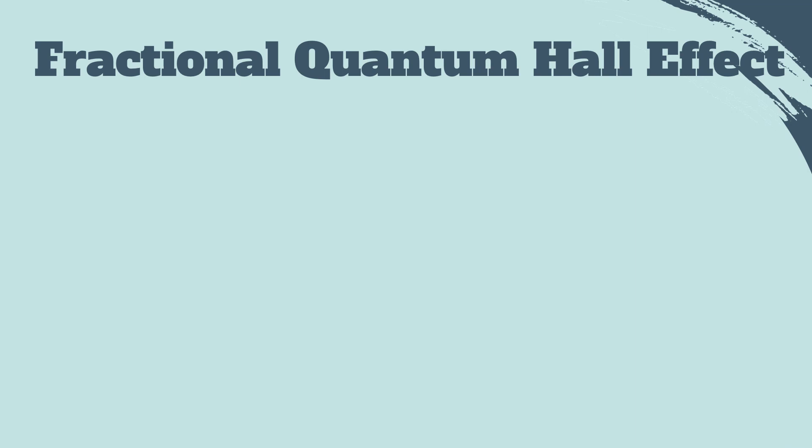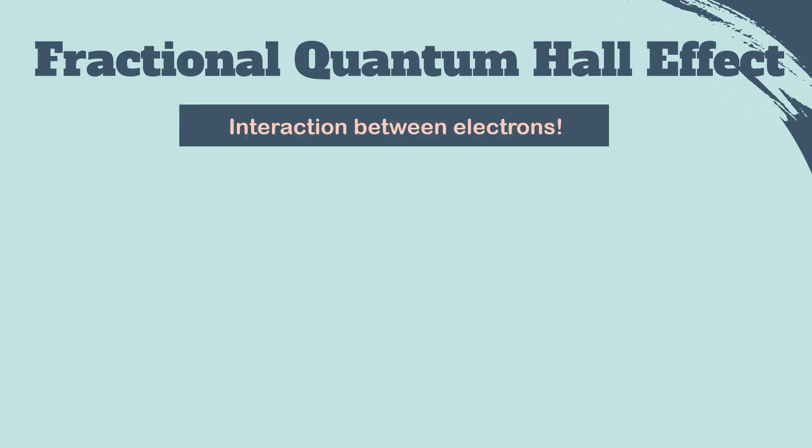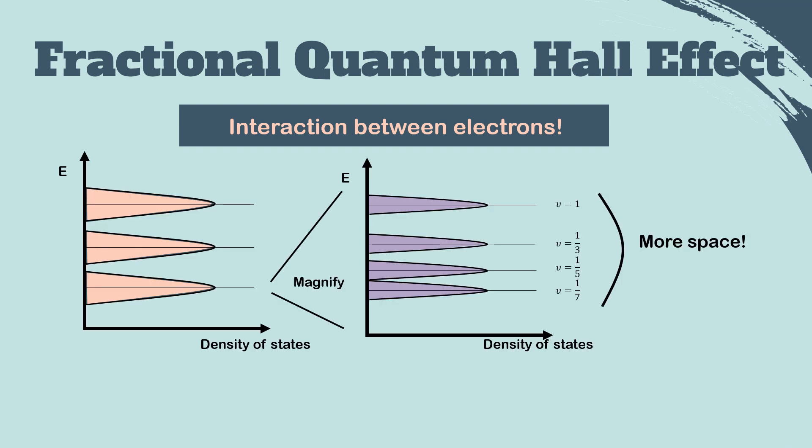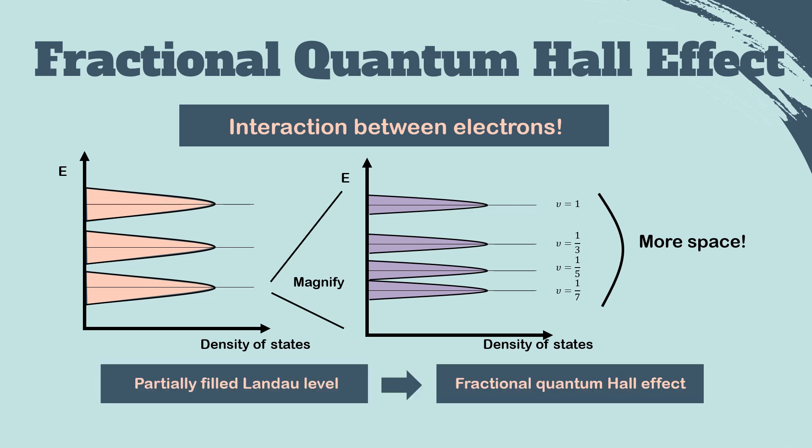On the other hand, the origin of a fractional quantum Hall effect is interaction between electrons. Unlike the integer quantum Hall effect, there is much space in a Landau level. Therefore, the electrons have freedom to avoid each other in the energetically most advantageous fashion. Thus, the Landau level is partially filled and the fractional quantum Hall effect happens.